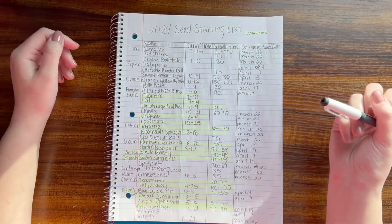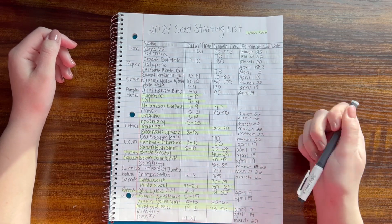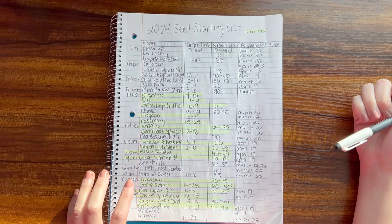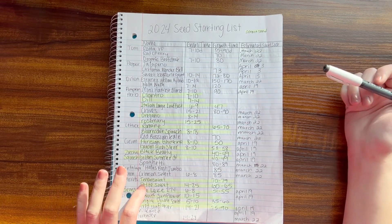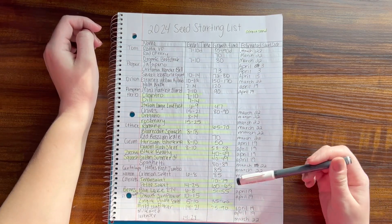For cantaloupe, I'm going to do Hales Best Jumbo this year. For watermelon, I'm going to do Crimson Sweet. I'm going to start those on the 22nd as well. For carrots, it's better to direct seed carrots, so I'm going to do Tender Sweet as well as Petite Sweet. I have a bunch of carrot seeds I want to use.